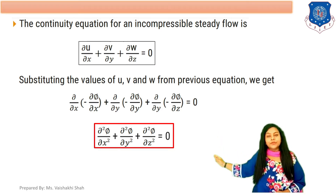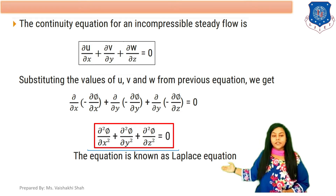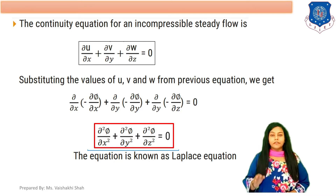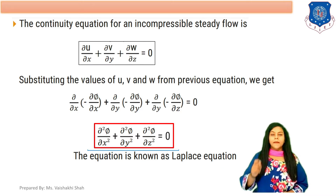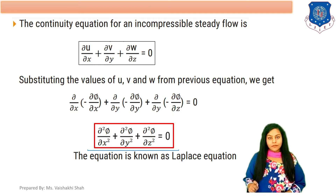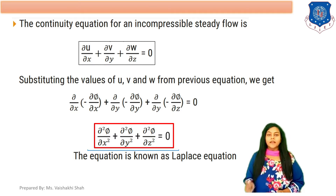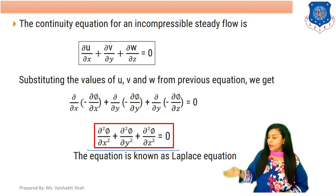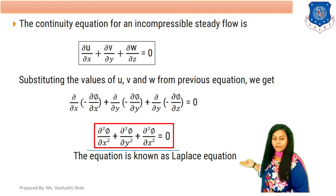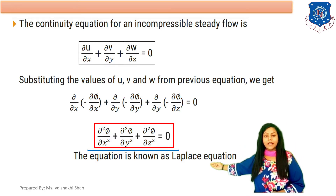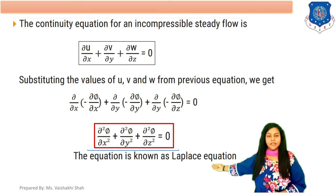This equation — del squared phi upon del x squared plus del squared phi upon del y squared plus del squared phi upon del z squared equals to 0 — is known as the Laplace equation. We derived this equation and it is known as the Laplace equation.